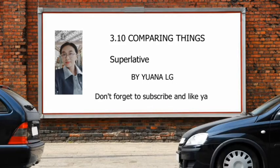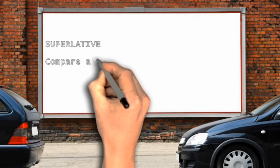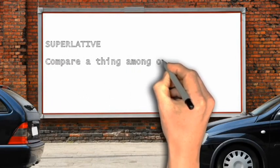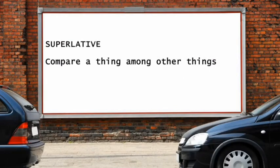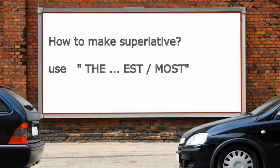Don't forget to subscribe and like. What is superlative? Superlative means comparing a thing among other things — membandingkan sesuatu benda di antara benda-benda yang lain, dari lebih dari satu benda. How to make a superlative in a sentence? Use 'the ... est' or 'most'.